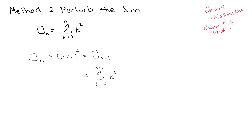Now we can tell that having the 0 at the bottom isn't helping. So we can actually just go ahead and rewrite this as k going from 1 to n+1 of k². Because who cares if we add 0 squared — it's just 0 — so I can actually rewrite the whole sum without the 0.